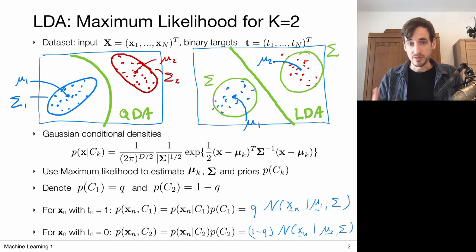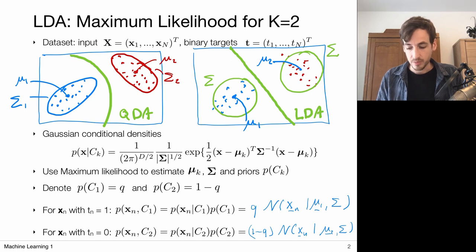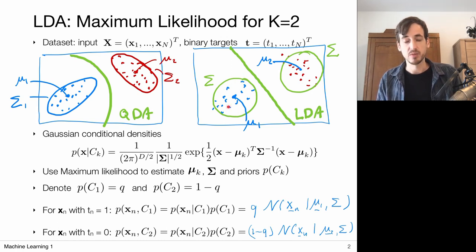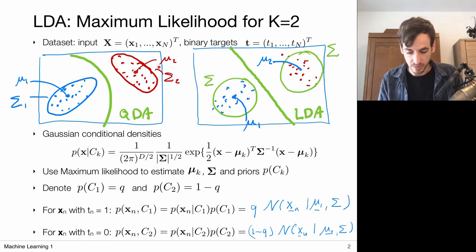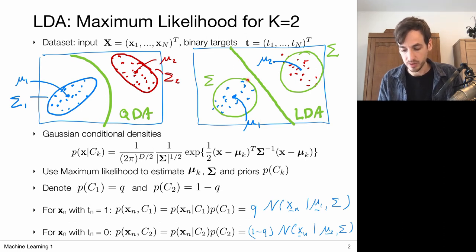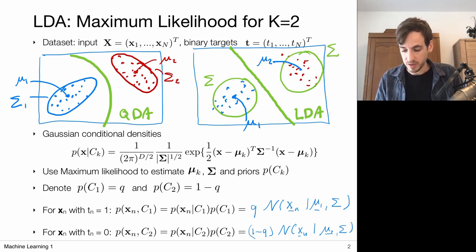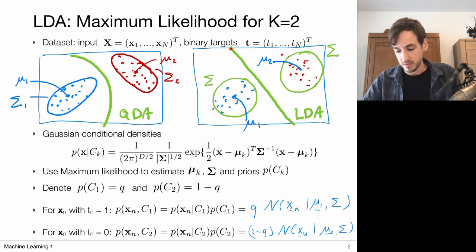In the general case, the resulting shared covariance matrix does not have to be isotropic. If both distributions were anisotropic in the same direction, the average would also be anisotropic. The key point is that these sigmas are the same for both classes, and that shared covariance matrix is what results in a linear decision boundary.